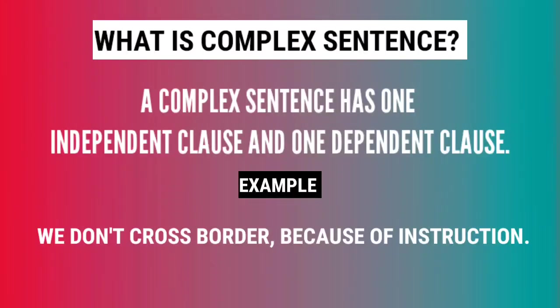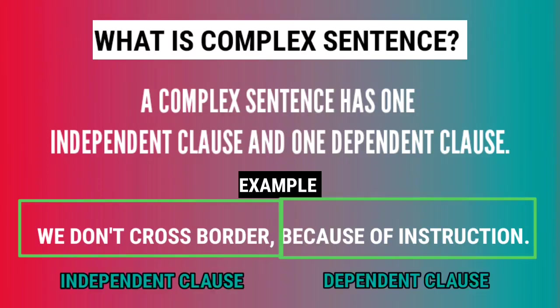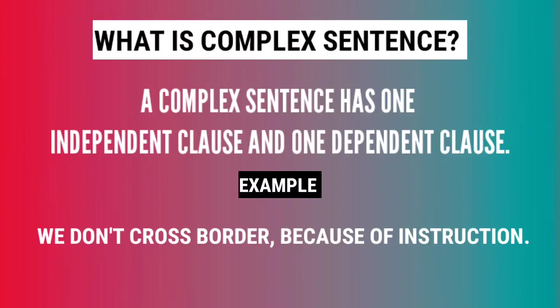Now we shall discuss what is a complex sentence. A complex sentence has one independent clause and one dependent clause. For example: 'We don't cross the border because of instruction.' Here one part is independent and the other is dependent.